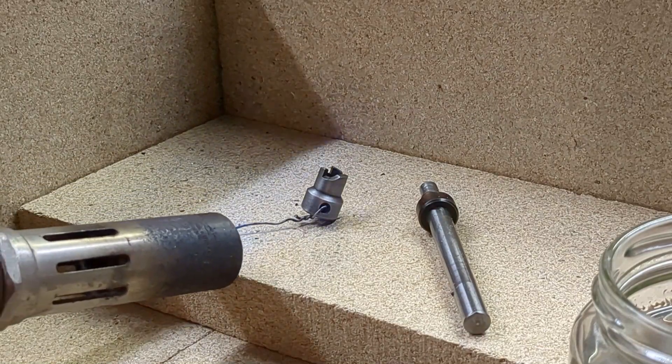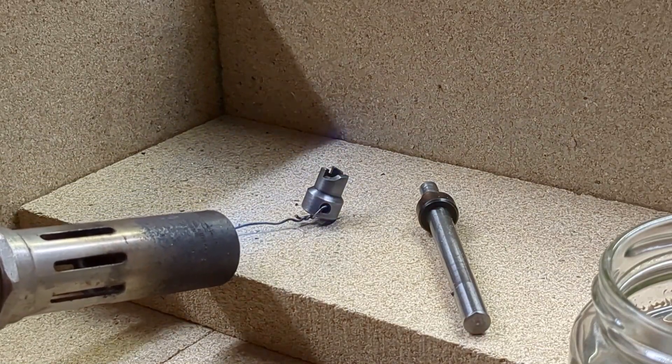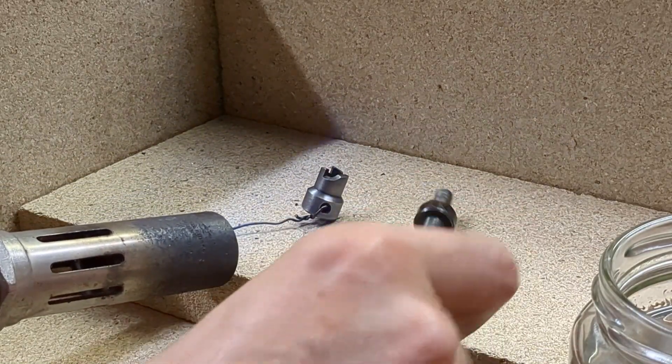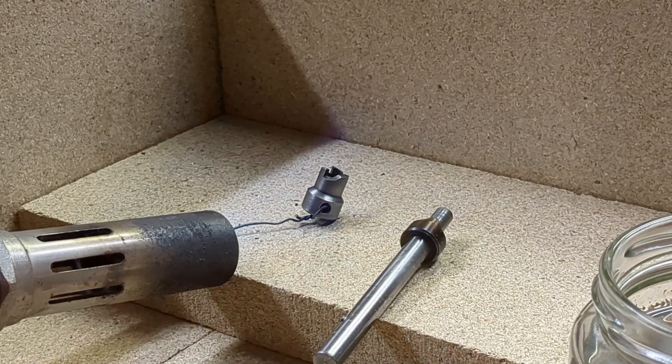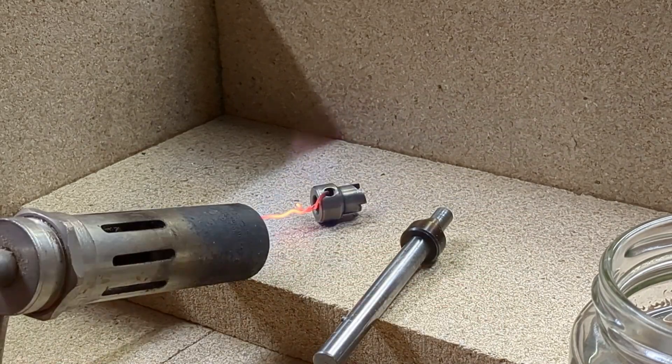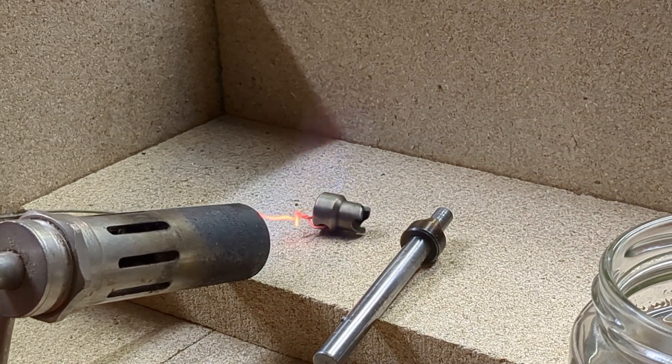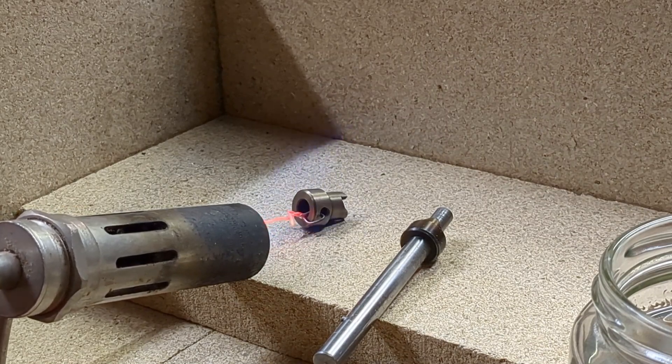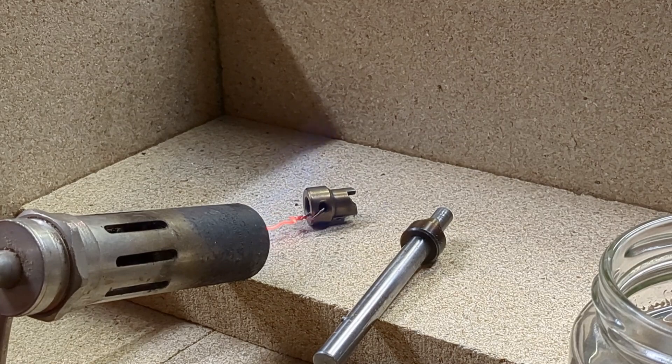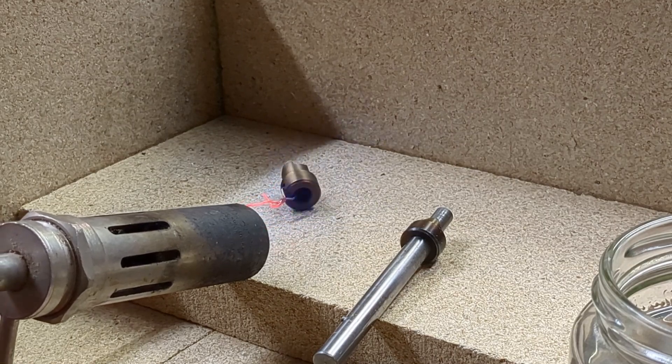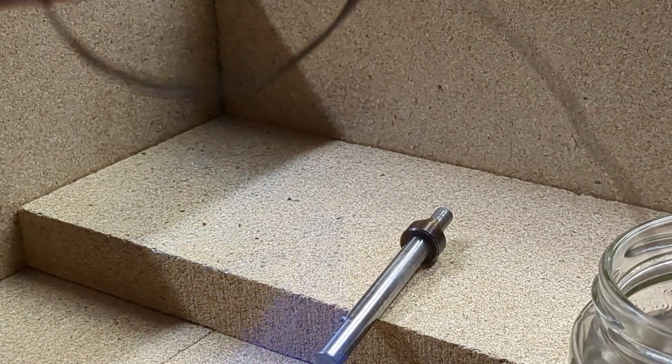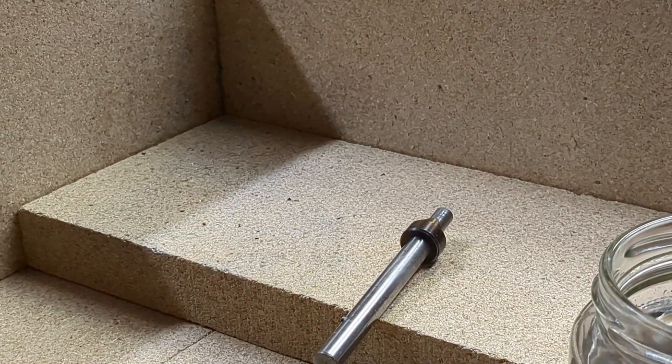So I laid the old cutter next to the one I'm working on as a color guide. I wasn't sure if this would work under artificial light, but it seemed to be okay. What I was aiming for was a slightly darker than light straw color. And you can see just how quickly the color changes. And then as soon as I reach the right color, I quench it. And that should be the right temper.